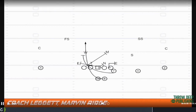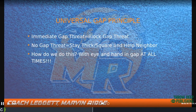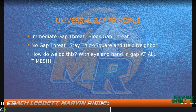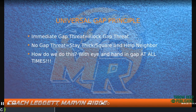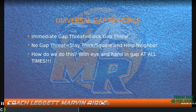Our gap principle: immediate gap, three-eagles block gap threat. If someone blitzes in our gap, we take them. No gap threat — stay thick and square, help your neighbor on double teams. Eye and hand in gap at all times — eye discipline and hand placement are key for GT counter. We use a crowder sled for open pull steps and teach near foot, near shoulder for the tight end and O-line.